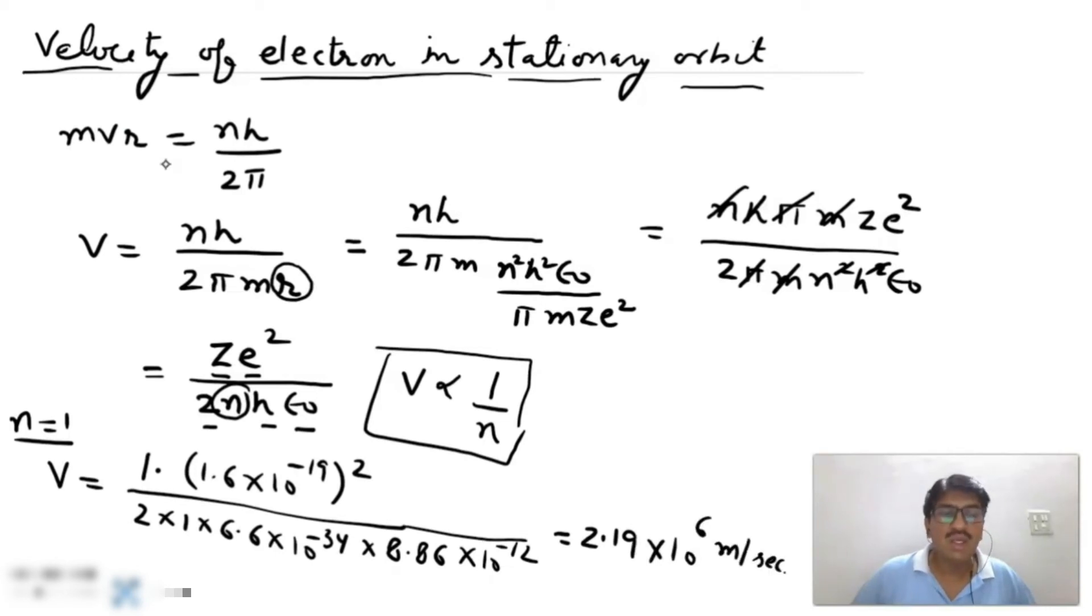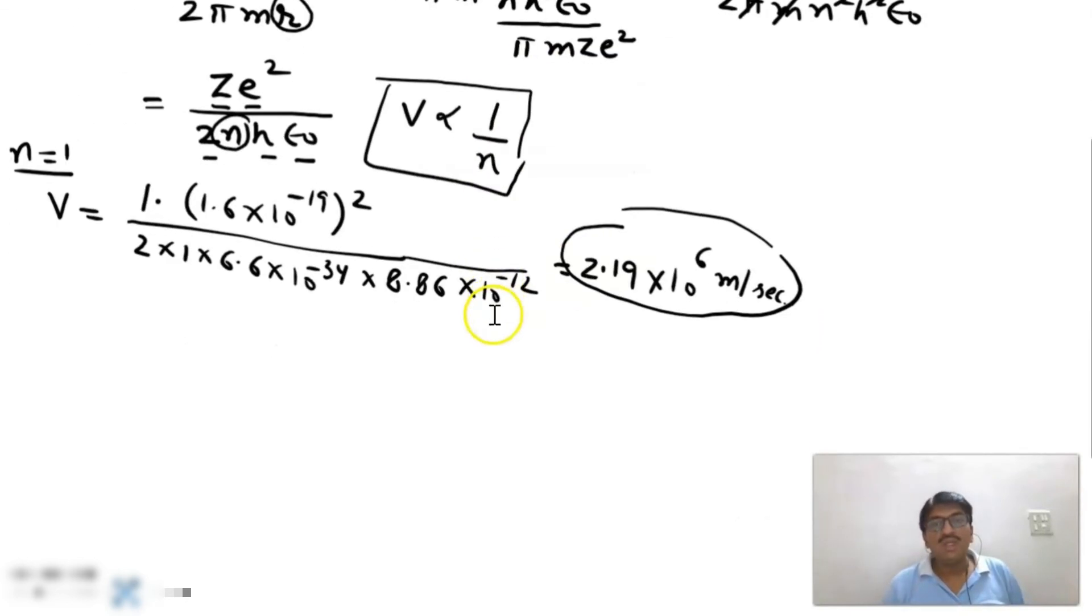It means an electron is revolving in a stationary orbit with a velocity of 2.19 × 10⁶ meter per second in hydrogen-like atom. Due to n equal to 1, we can also write this velocity as V₁.